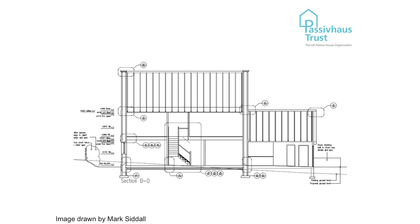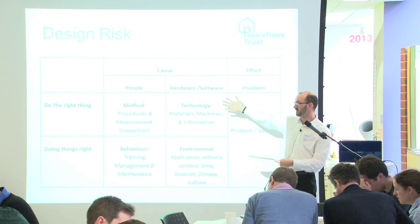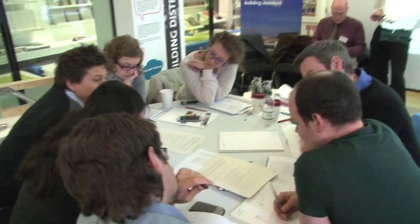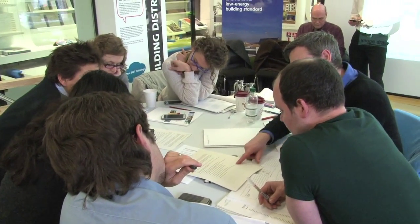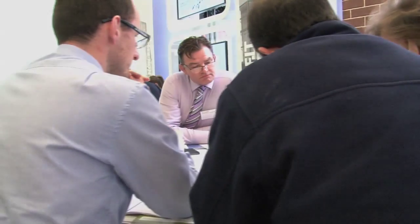Think about it from the range of different considerations. What risks might exist because of quality assurance methods? How are you actually going to achieve that through behaviour — what are people going to do on site that could go wrong? What issues are you going to have to consider environmentally, such as weather conditions? And also, consider the technologies you're specifying — are all of these technologies appropriate and compatible, and are they going to lead to a successful conclusion?